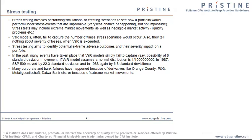What do we mean by stress scenarios? These might include events that have taken place in the past that VaR models failed to capture. For example, VaR models based on normal distribution assume that the possibility of movements by more than six standard deviations is very close to zero. However, in 1987, the S&P index crashed by several more standard deviations. Similarly, if something like the situation that led to the downfall of LTCM happens again, how would my portfolio respond? Stress tests may also include negligible market activity that creates liquidity problems. VaR models should be accompanied by stress testing to get the overall picture of risk.